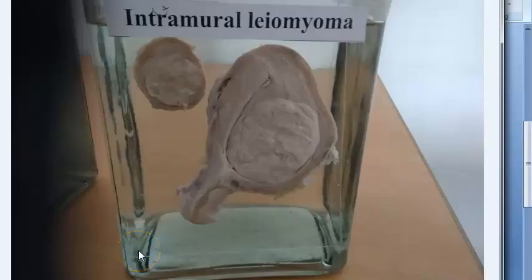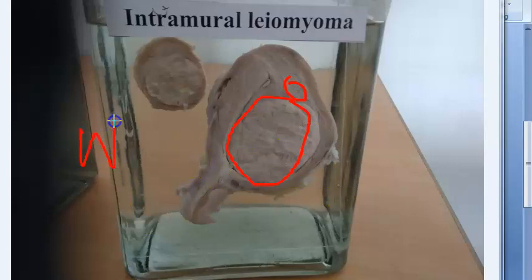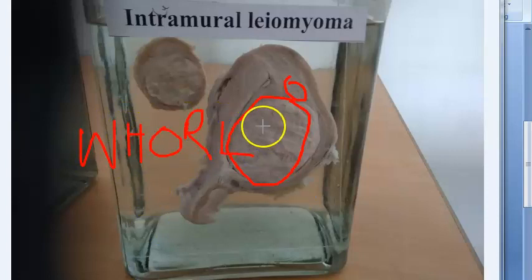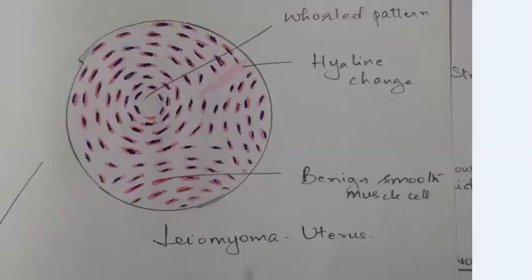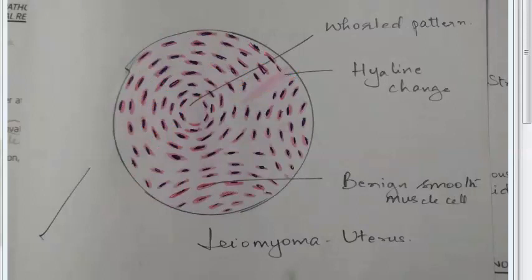Grossly, leomyomas are multiple, circumscribed, firm, nodular, gray-white masses of variable size. Because they are benign you can say they are circumscribed and nodular. On cut section you will see a whorl pattern. In microscopy you are seeing the whorl pattern, hyaline change, whorl pattern, and benign smooth muscle cells.